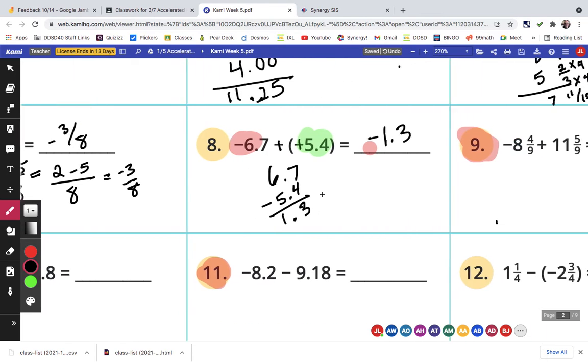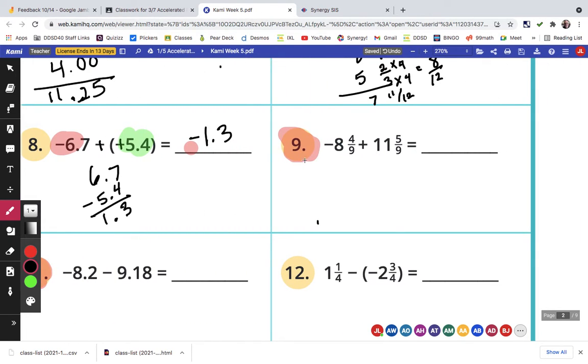The next one was number 9. The signs are different, so I'm going to find the difference. So I'm going to do 11 and 5/9 and subtract 8 and 4/9. 5/9 minus 4/9 is 1/9. 11 minus 8 is 3. And there's more positive than negative, so it's 3 and 1/9.